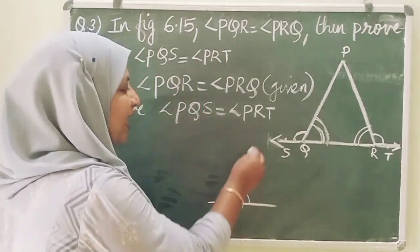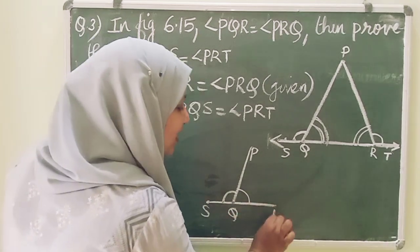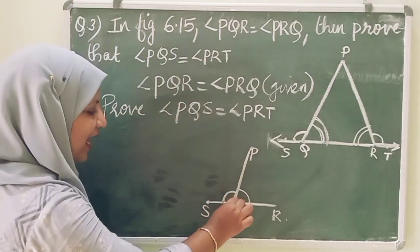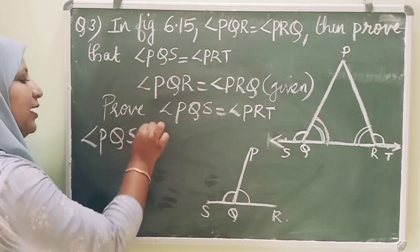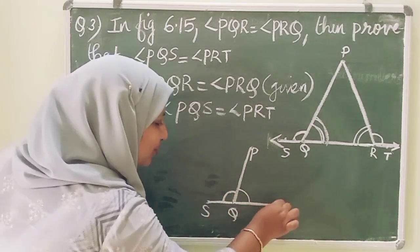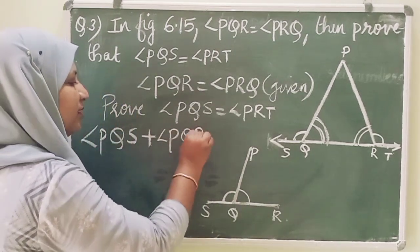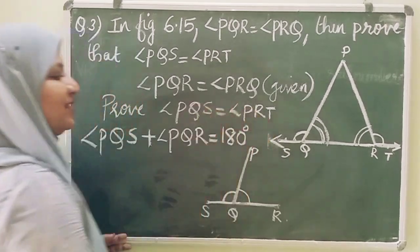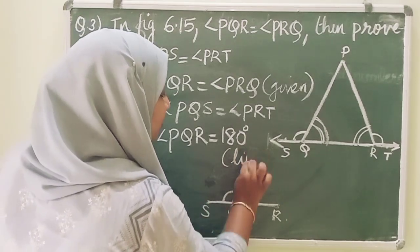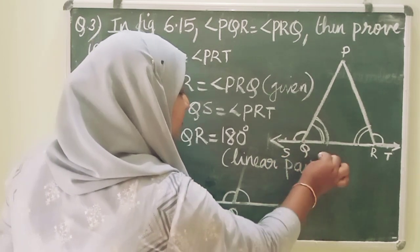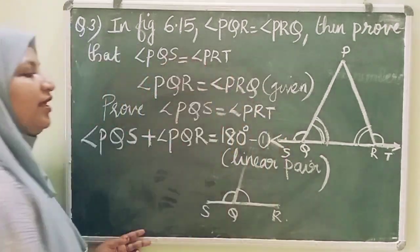Now we write the first equation: angle PQS plus angle PQR is equal to 180 degrees. The reason is linear pair. This is our first equation.